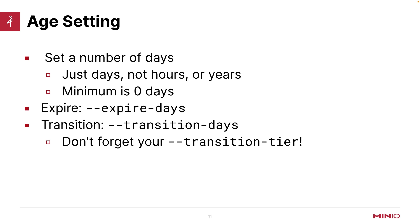You can set zero days for expire days or transition days. If you're doing a transition, make sure you also set your transition tier so it knows where to put the object. The reason you would set zero days is because you have other criteria — maybe a prefix, a tag, or older versions — that you are going to set in addition. You wouldn't just set zero days otherwise. What's going to happen is when the object lifecycle management scanner comes through and starts tagging things, it's going to say zero days, meaning everything it finds should go. That's why you'd want to have some other filter there. In practice, you'll more likely see 30 days or 90 days.